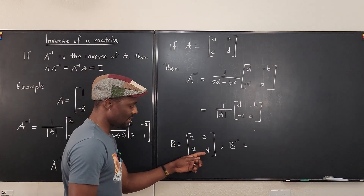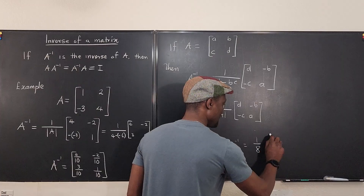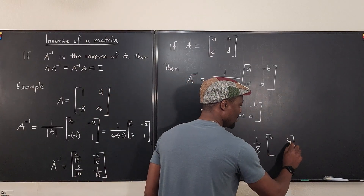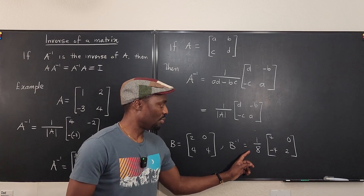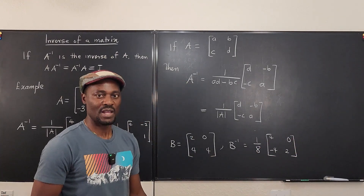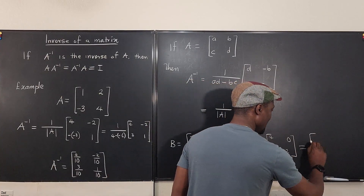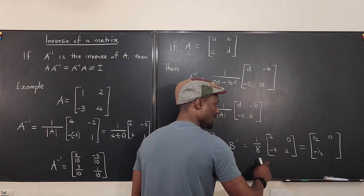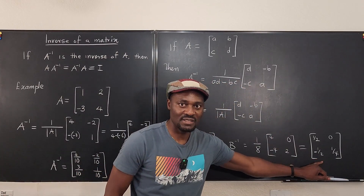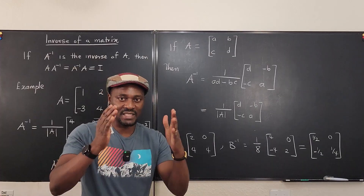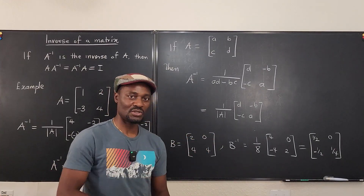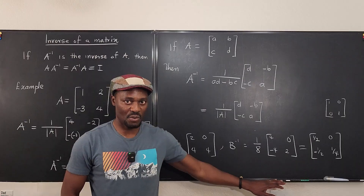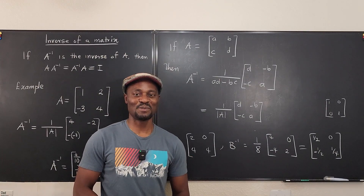The determinant of B is 8 minus 0, which is 8. So B-inverse equals 1/8 times [4, 0; -4, 2]. Plugging in the numbers: 4/8 = 1/2, 0/8 = 0, -4/8 = -1/2, and 2/8 = 1/4. Multiplying B by this gives the 2x2 identity matrix. Remember the formula for 2x2 matrices — never stop learning!